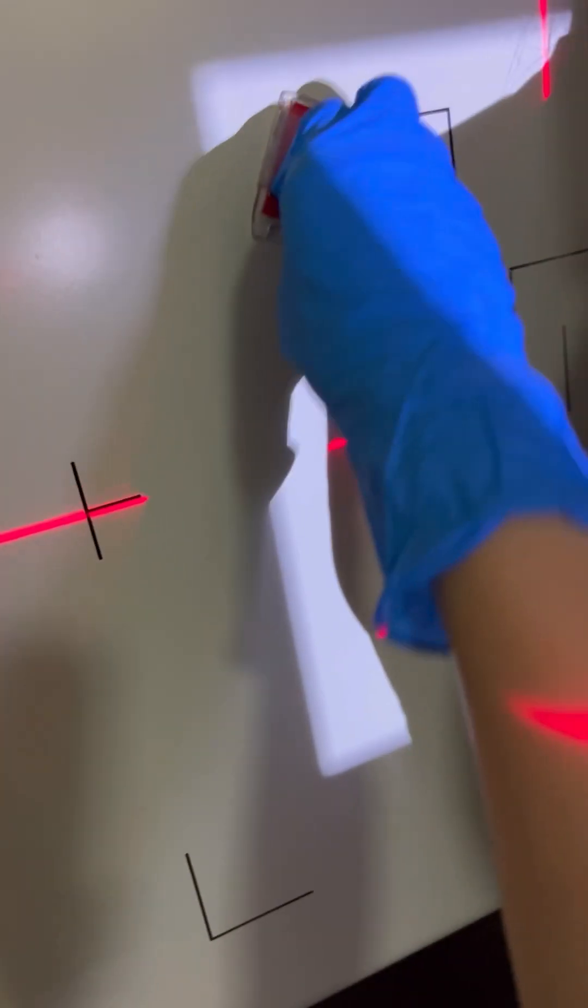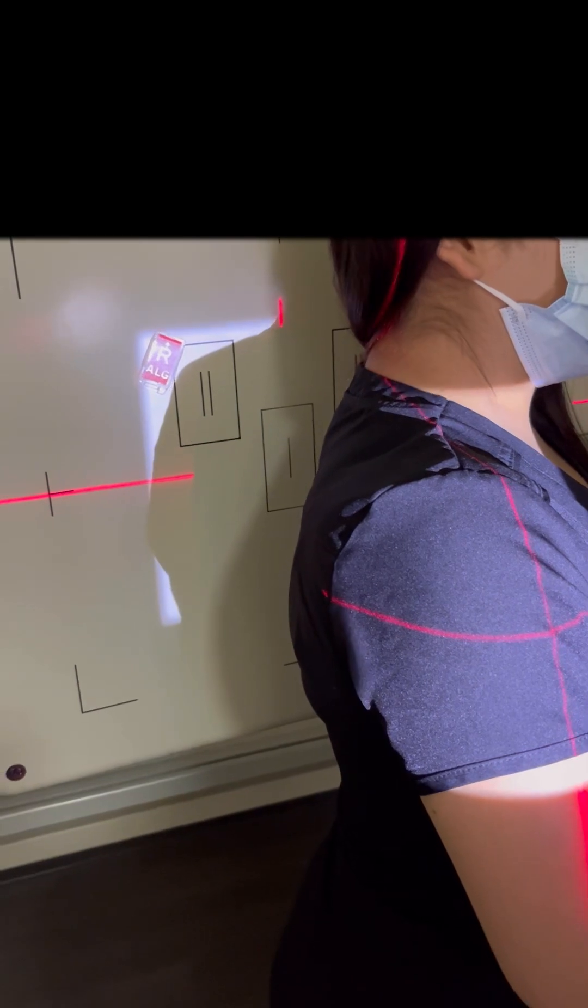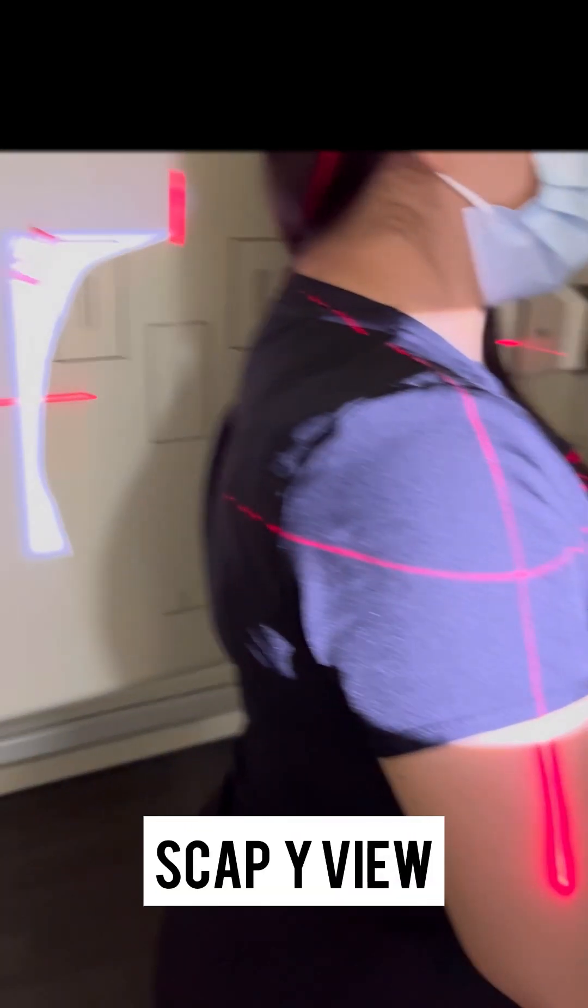Then just put your marker like that, and then you try to collimate, and that should be a good scapula.